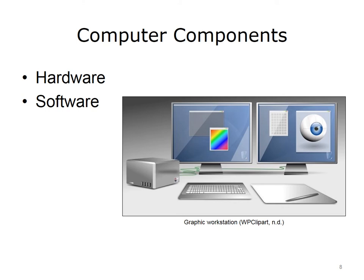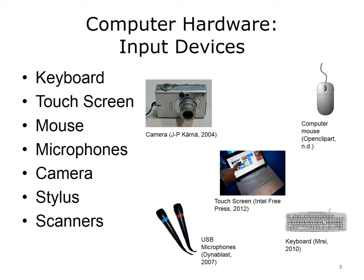All computers contain hardware and software. Hardware is the physical equipment that makes up the computer. Software includes the programs that run on the hardware and make that computer useful. One type of computer hardware is the input device. Input devices allow users to input information into a computer. Some examples are keystrokes on a keyboard, mouse clicks, touching a touchscreen, speaking into a microphone, importing files from a camera, touching or writing with a stylus, and scanning a photo or a document. The input is then processed by the computer, and the appropriate action is taken. For example, if you click on a button at your favorite online store, the computer does something in response, like add an item to your shopping cart.